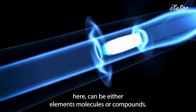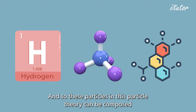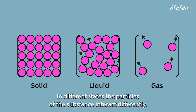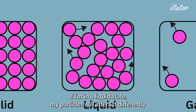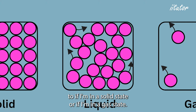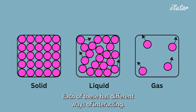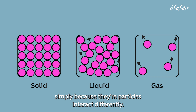The particles we've talked about can be either elements, molecules, or compounds, and the particles in particle theory can be composed of any one of these three, or any mix. In different states, the particles of a substance interact differently. In a liquid state, particles interact differently than in a solid state or a gas state. Each state has different ways of interacting, which is why different states have different properties — simply because their particles interact differently.